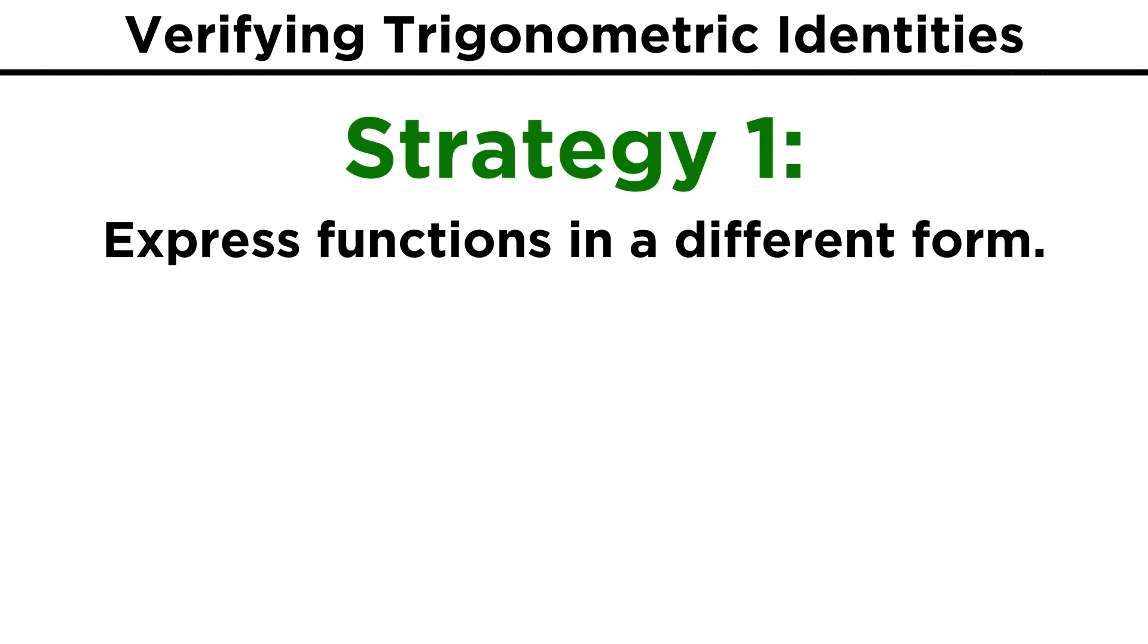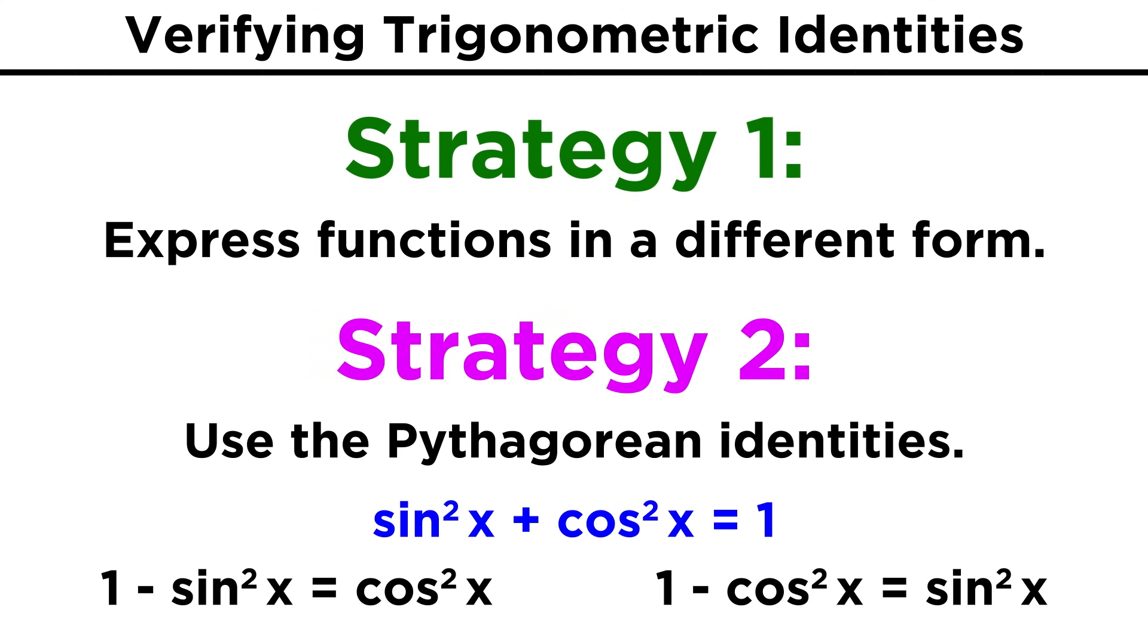So we have already outlined a few strategies that we can try. One is to rewrite individual identities. Another is to use this identity, which can allow us to change sine squared plus cosine squared into one, or it can allow us to change one minus sine squared into cosine squared, or one minus cosine squared into sine squared. Keep those in mind, as they will come in handy.